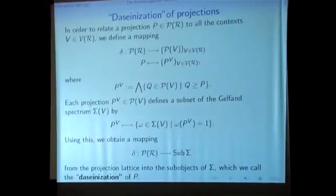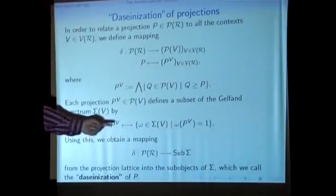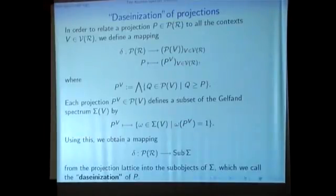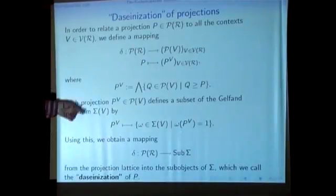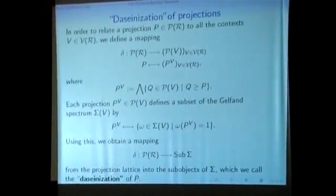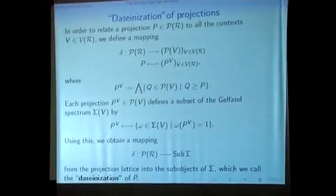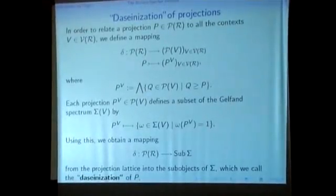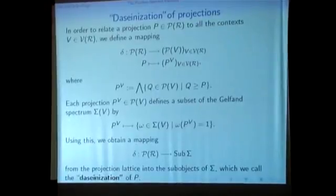And then it can be shown, it's quite easy to see, that we get a sub-object of this pre-sheaf, a sub-pre-sheaf of sigma. Sigma was the collection of the whole Gelfand spectrum. Now in each Gelfand spectrum we have a certain subset, and these subsets fit together nicely with the restrictions, which means we get a sub-object of sigma. So this daseinization map throws things into existence, as Chris likes to say, and sends a projection to some object of the spectrum pre-sheaf.